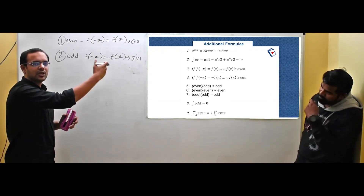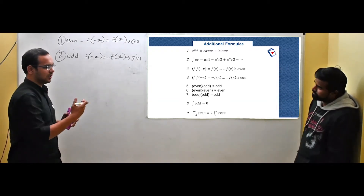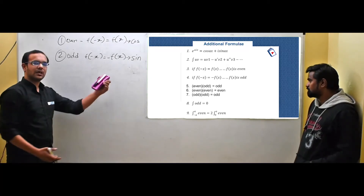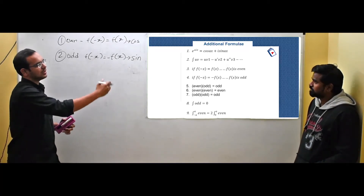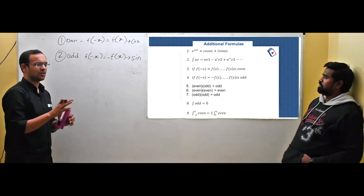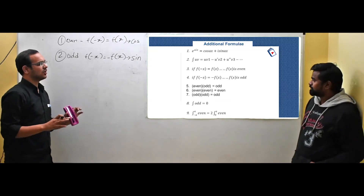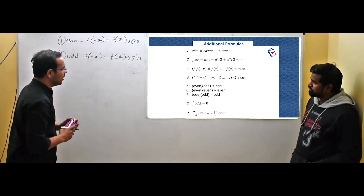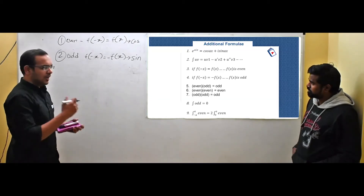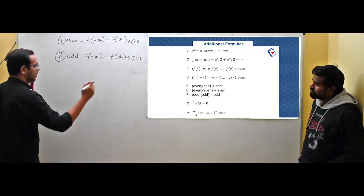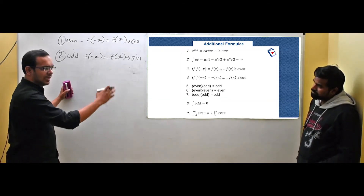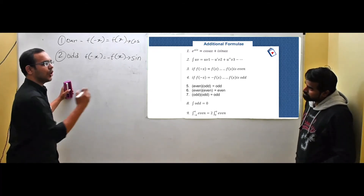So we have to find the multiplicative properties of even and odd functions. Even times even gives even, even times odd gives odd, and odd times odd gives even - just like our plus and minus sign rules. There is also another very important formula: the integration of an odd function over symmetric limits is zero.